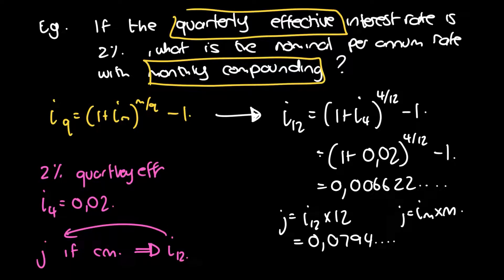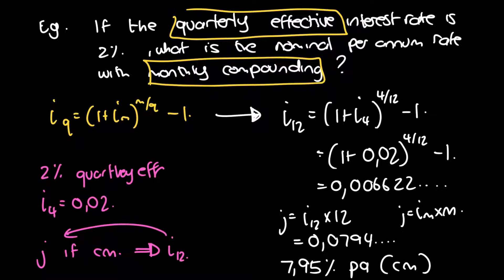When talking about it we want it as a percentage, so we multiply by 100. That gives 7.95% per annum compounded monthly — rounded to two decimal places. So here we first converted to the equivalent effective interest rate, then took that and converted it to a nominal interest rate to get the answer we were looking for.